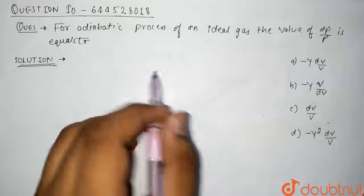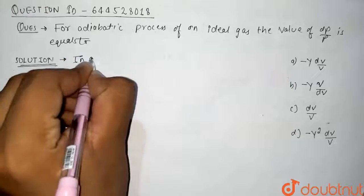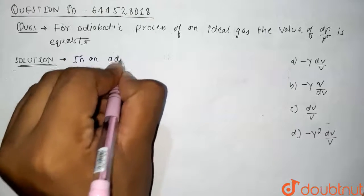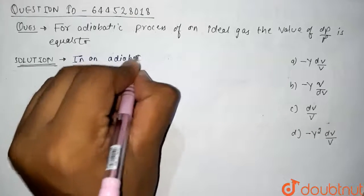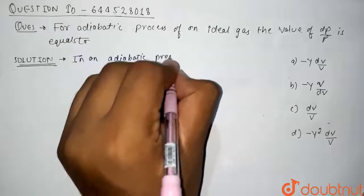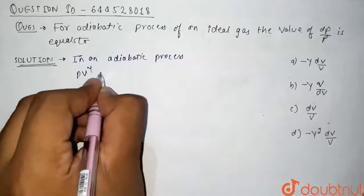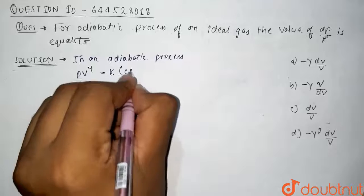Now see, we know that in an adiabatic process, PV to the power γ is equals to K, that is constant.